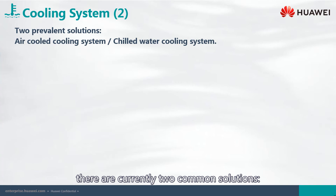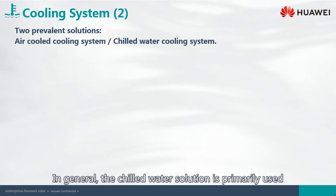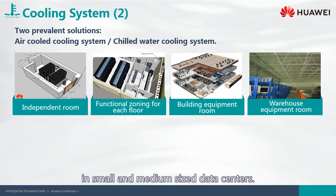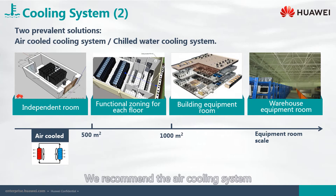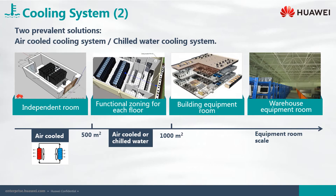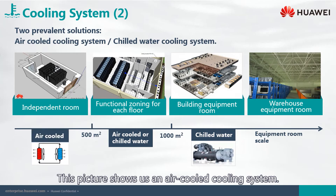Based on the scale and total capacity of data centers, there are currently two common solutions: an air-cooled cooling system and a chilled water cooling system. In general, the chilled water solution is primarily used in extra-large and large-sized data centers, and the air-cooled solution is usually used in small and medium-sized data centers. We recommend the air cooling system for computer rooms smaller than 500 square meters. For computer rooms with an area between 500 and 1000 square meters, we recommend using the air-cooled or chilled water cooling system. For computer rooms sized 1000 square meters and above, we recommend the chilled water cooling system.